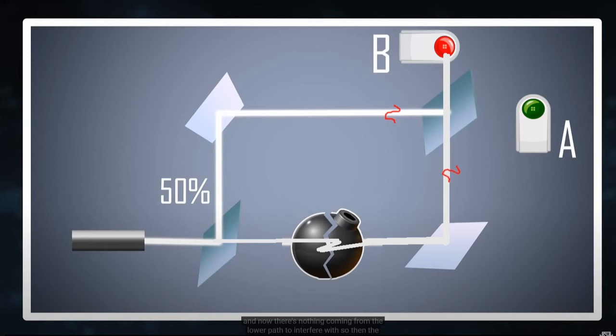That's why in the end two parts of the wave constructively interfere into detector B. So the bomb did something to the superposition wave without making it collapse. It just shifted its phase without absorbing its energy. This means the bomb tester found the bomb is live without it being exploded.